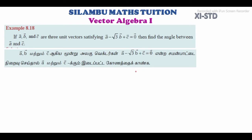Hi student, this is Selambu Max tuition 11th standard example 8.18. If A vector, B vector and C vector are 3 unit vectors satisfying A vector minus root 3 B vector plus C vector is equal to 0 vector, then find the angle between A vector and C vector.